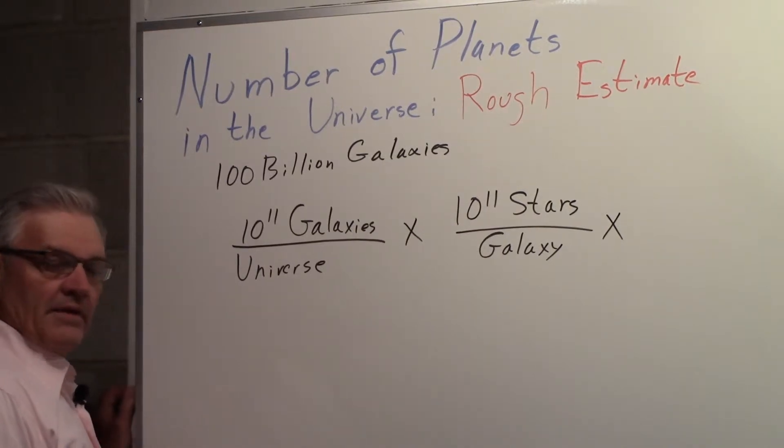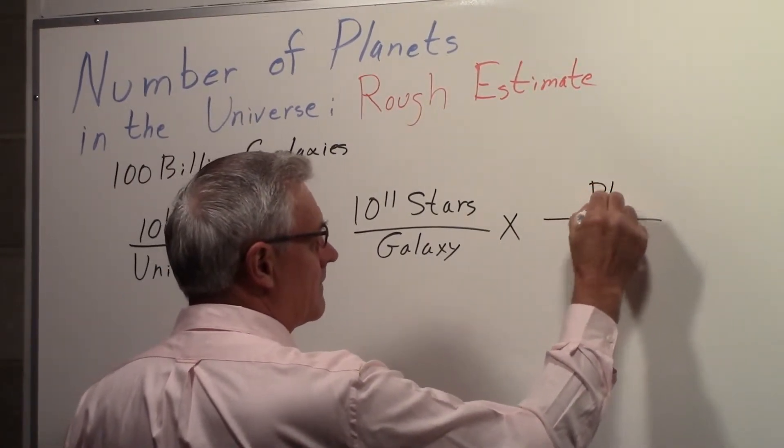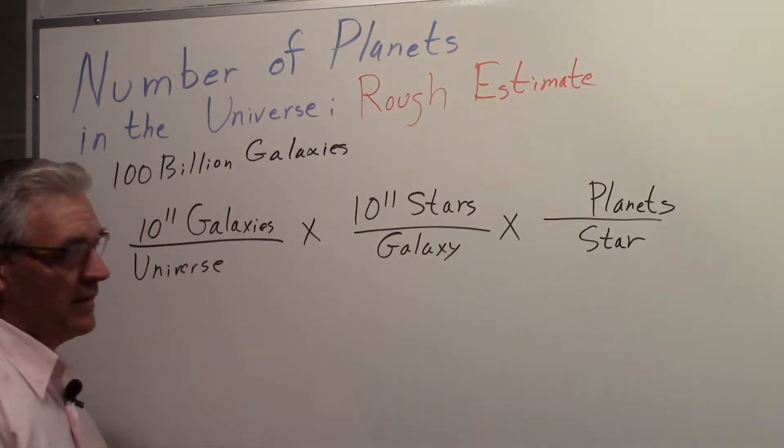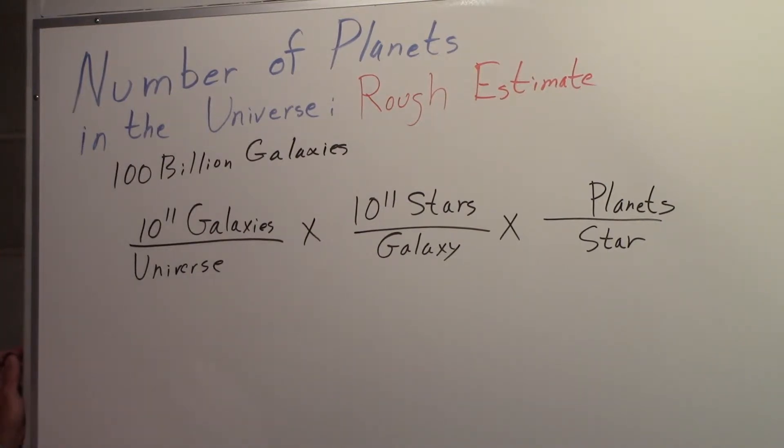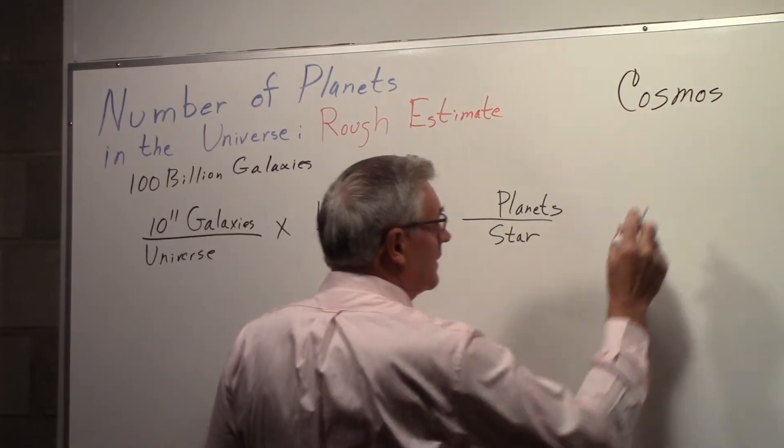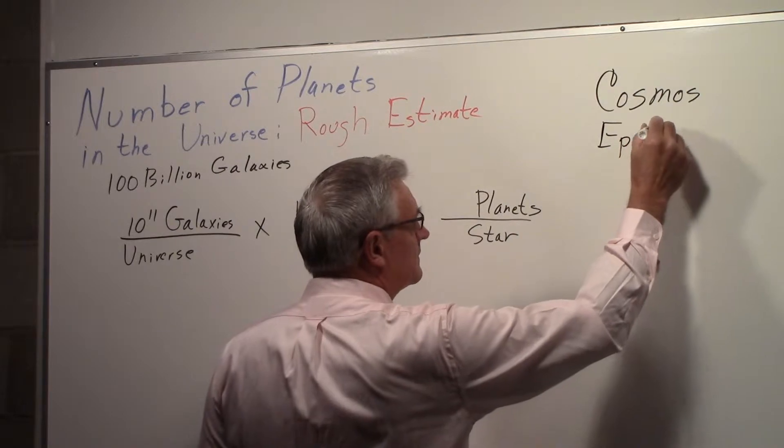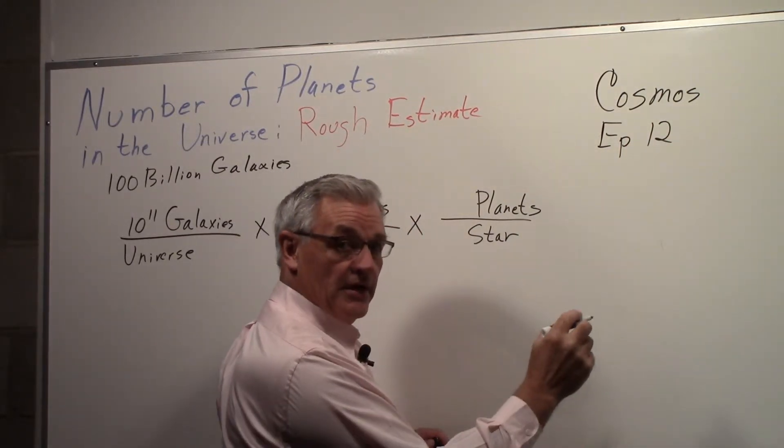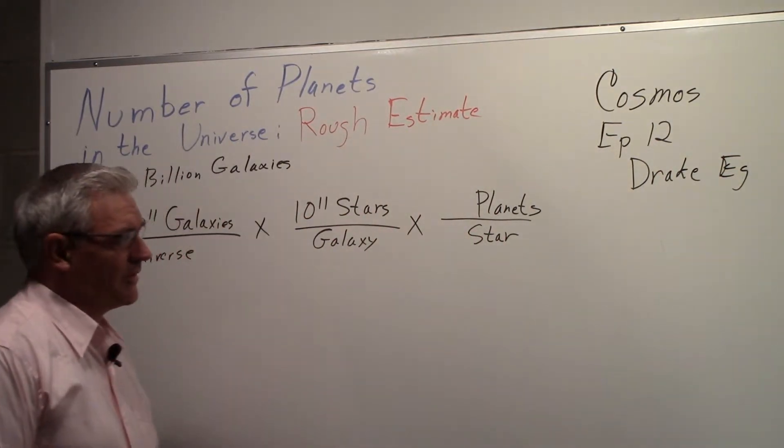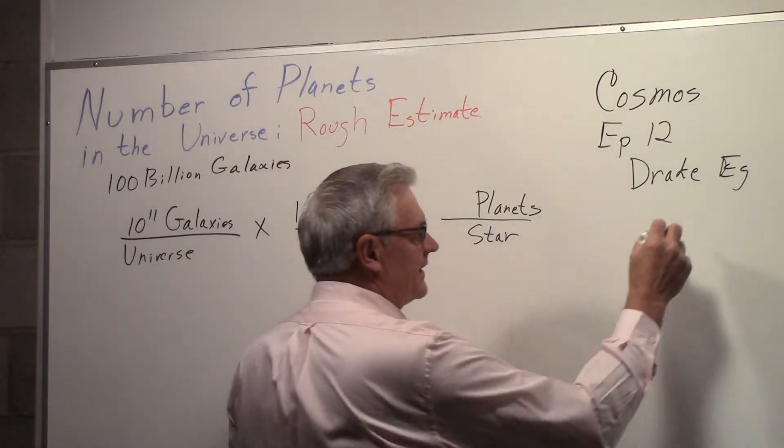And now we need to say roughly how many planets there are per star in the universe. If you look back at the series Cosmos, in episode twelve, Carl Sagan talks about the Drake equation. And when he's talking about that Drake equation, he too needs a number of planets per star. And what he said was, assume...